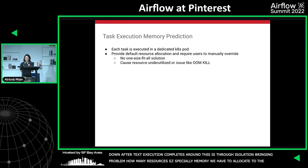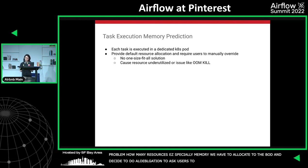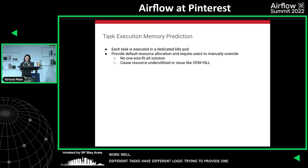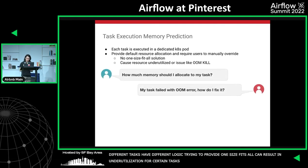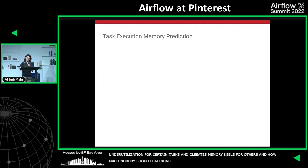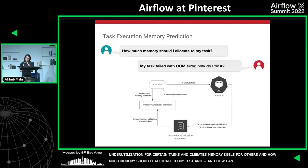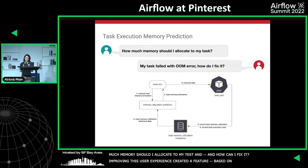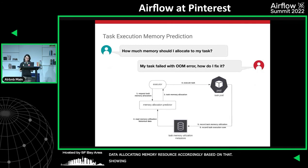This approach ensures good isolation but raises the question of how much memory to allocate to pods. We initially used a default resource allocation and asked users to manually override it in their task definition. This didn't work well because different tasks have different logic — a one-size-fits-all solution caused resource underutilization for some tasks and out-of-memory kills for others. Users often asked how much memory to allocate or how to fix OOM failures.